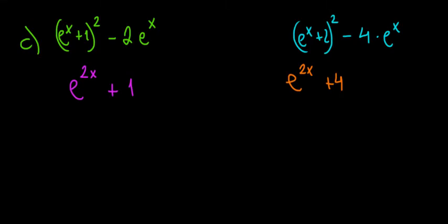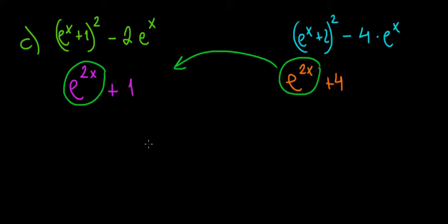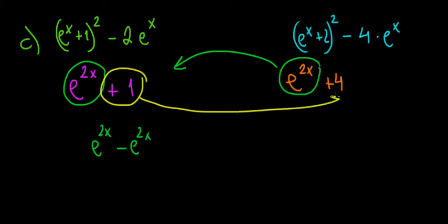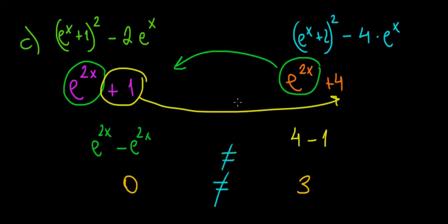To prove these cannot be equal, we bring the like terms to the same sides. The e to the power of 2x terms subtract to give 0, and the constants give 4 minus 1, which is 3. So we have 0 equal to 3, which is clearly false. Since this is what we get when starting from those two expressions, they can never be equal for any x. That's the proof, and we are done.